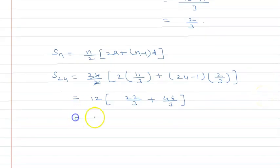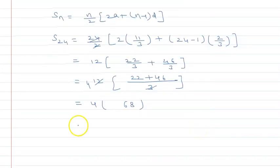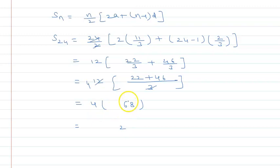Taking LCM, this becomes 12 × [(22 + 46)/3]. This cancels 4 times, so 4 × 68. 4 × 8 = 32 and 4 × 6 = 24, plus 3 is 27, so 272.